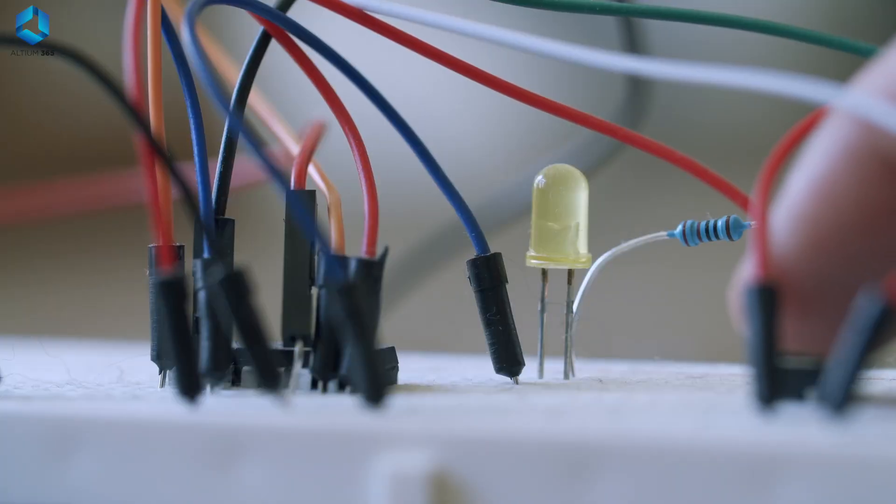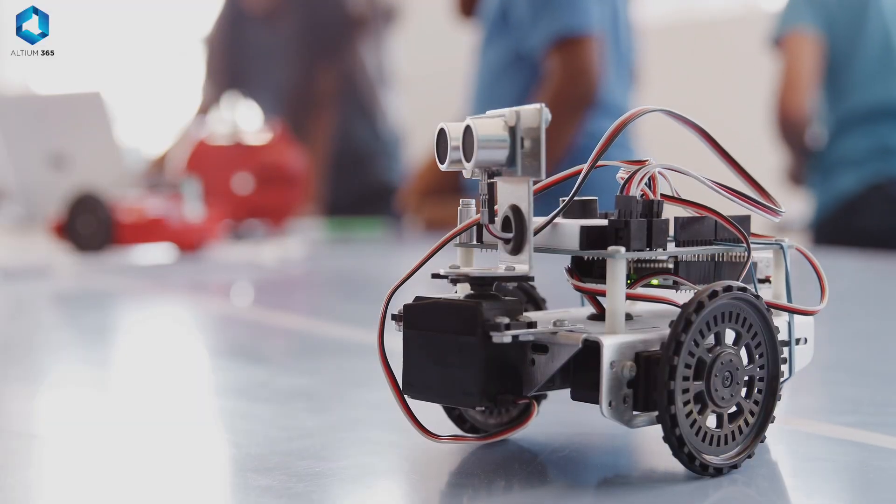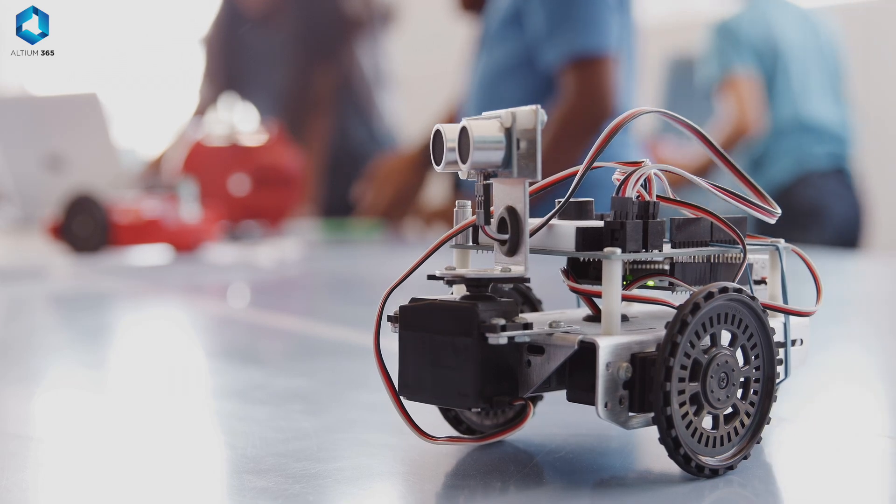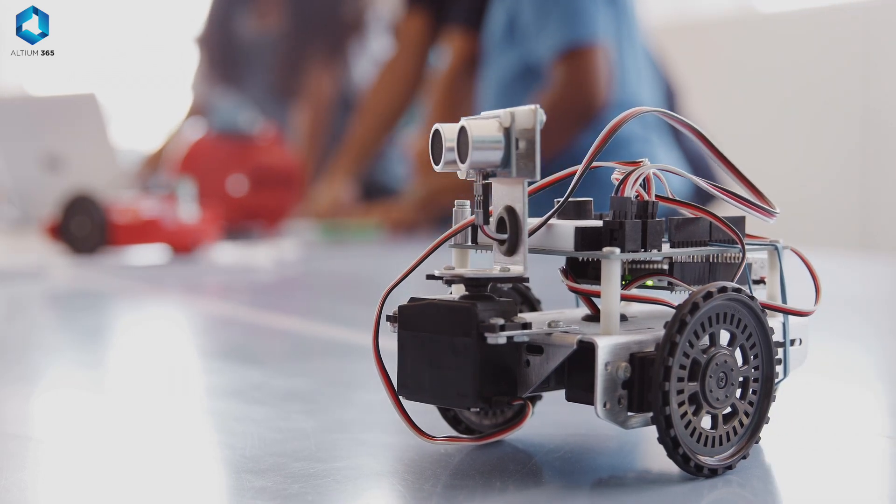So to sum up, first learn the basics of electronics. That will be the most important step. Learn how to draw the circuit diagrams, learn how to use basic components like resistors, capacitors, and LEDs. After that you can go to some advanced components like transistors, inductors, motors, sensors and all these kind of things.